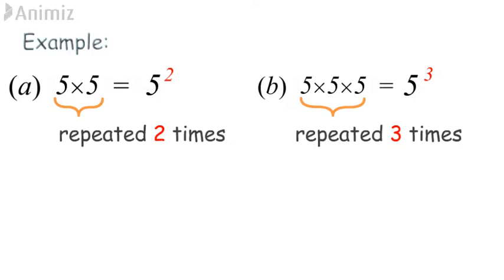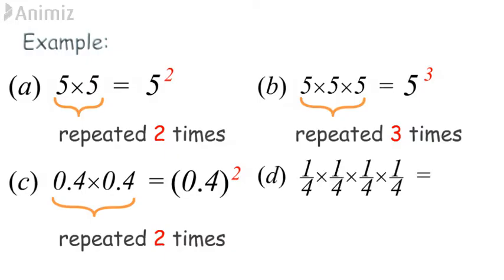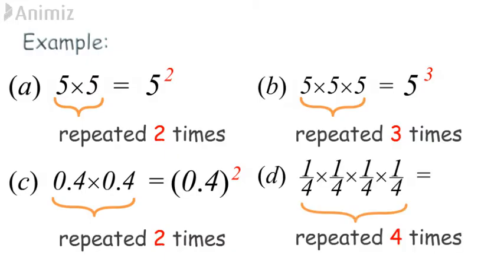Example C: since the base 0.4 is repeatedly multiplied 2 times, the base will be 0.4 and the index will be 2. Example D: since the base one quarter is repeatedly multiplied 4 times, the base will be (1/4) and the index will be 4.